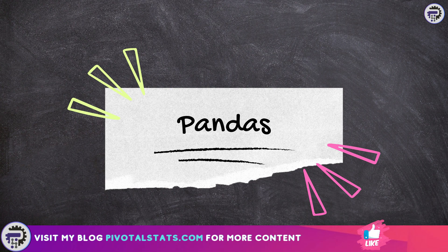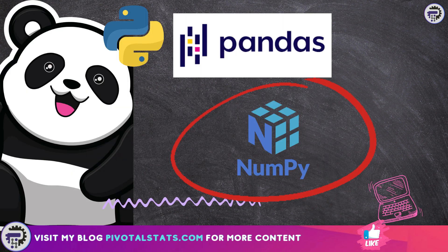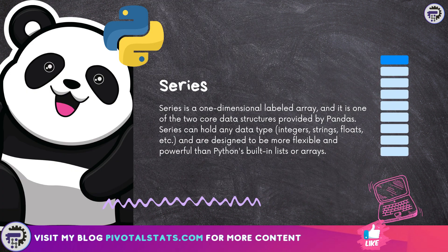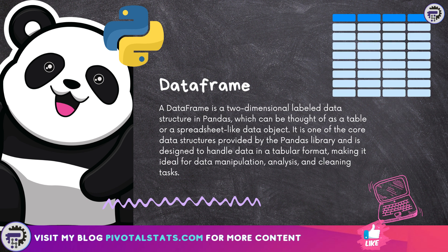Pandas is an open source Python library used for data manipulation and analysis. It's built on top of NumPy and provides two primary data structures. The first one is a Series and the second one is a DataFrame. A Series is a one-dimensional labeled array which looks like a single column of data, and a DataFrame is a two-dimensional labeled data structure resembling a table which has rows and column data.